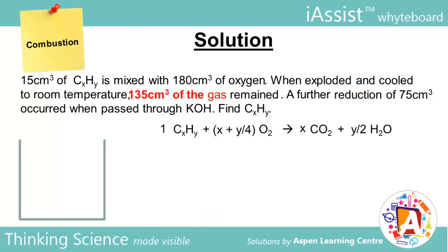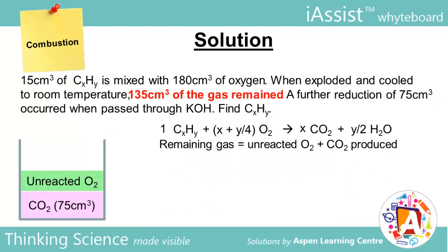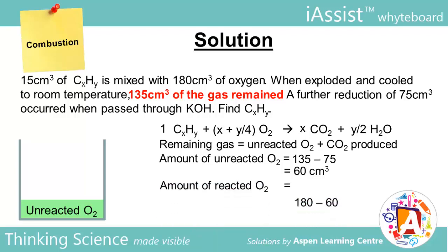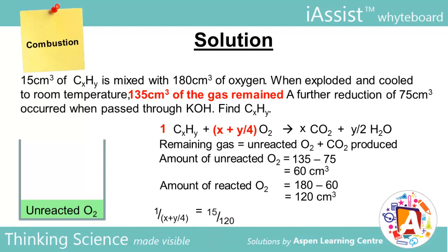Keeping in mind that the remaining gases after cooling consist of unreacted O2 and CO2, the volume of unreacted O2 is 135 minus 75, which equates to 60 cm³. Recall from Question 1 Part B that the amount of reacted O2 equals the initial amount minus the unreacted portion. In this case, 120 cm³ of O2 has reacted. There is 1 mole of CXHY to x plus y over 4 moles of oxygen. Hence, equating 1 over (x + y/4) to 15 over 120, and substituting x equals 5, y equals 12.